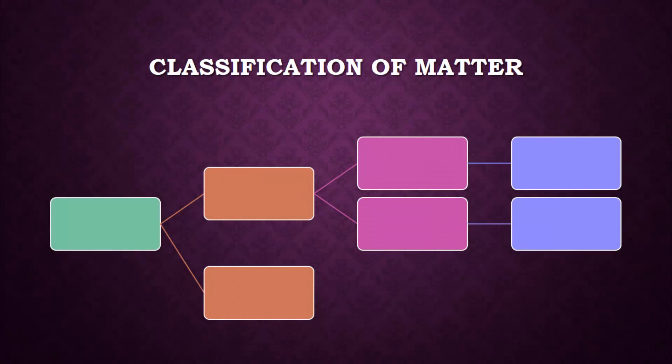Now we can talk about the classification of matter. Anything in the universe that is not pure energy is matter. Matter can be divided into two main categories. The first is leptons, which we've already learned about. These are not made of anything smaller and do not combine to form anything bigger.